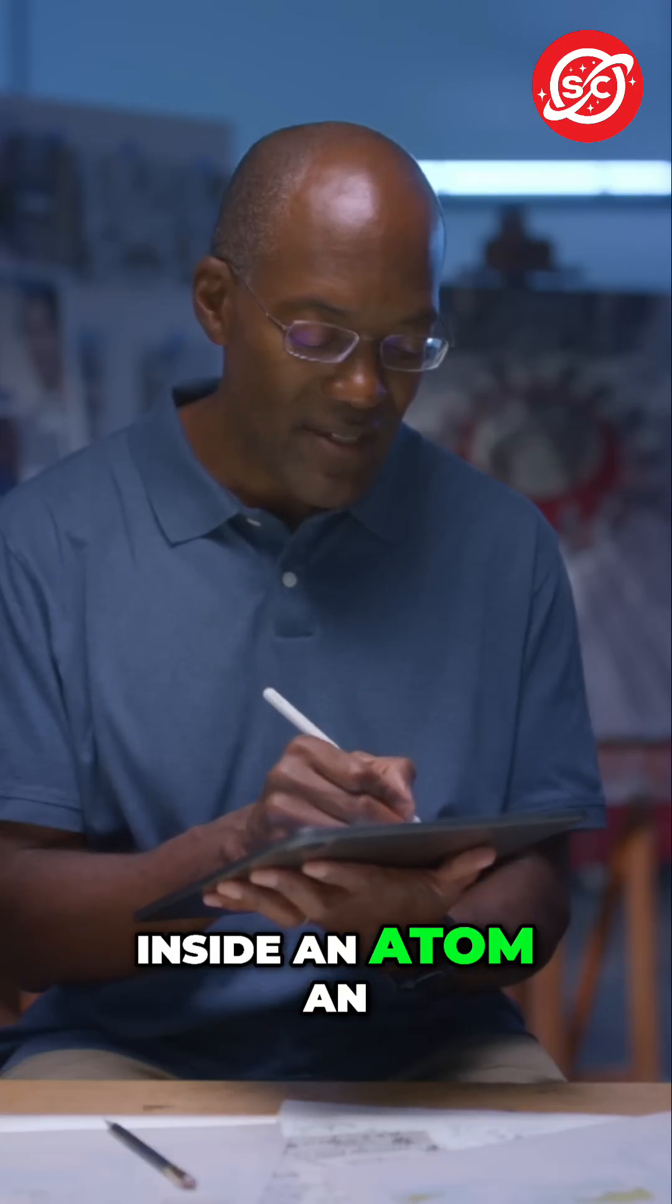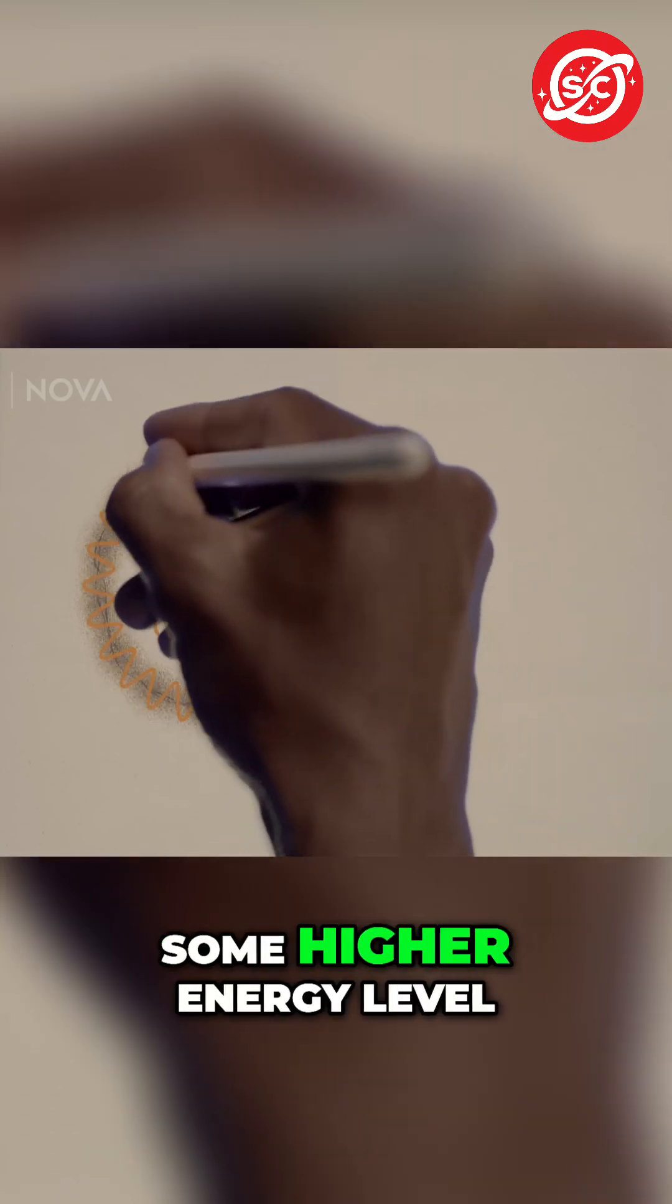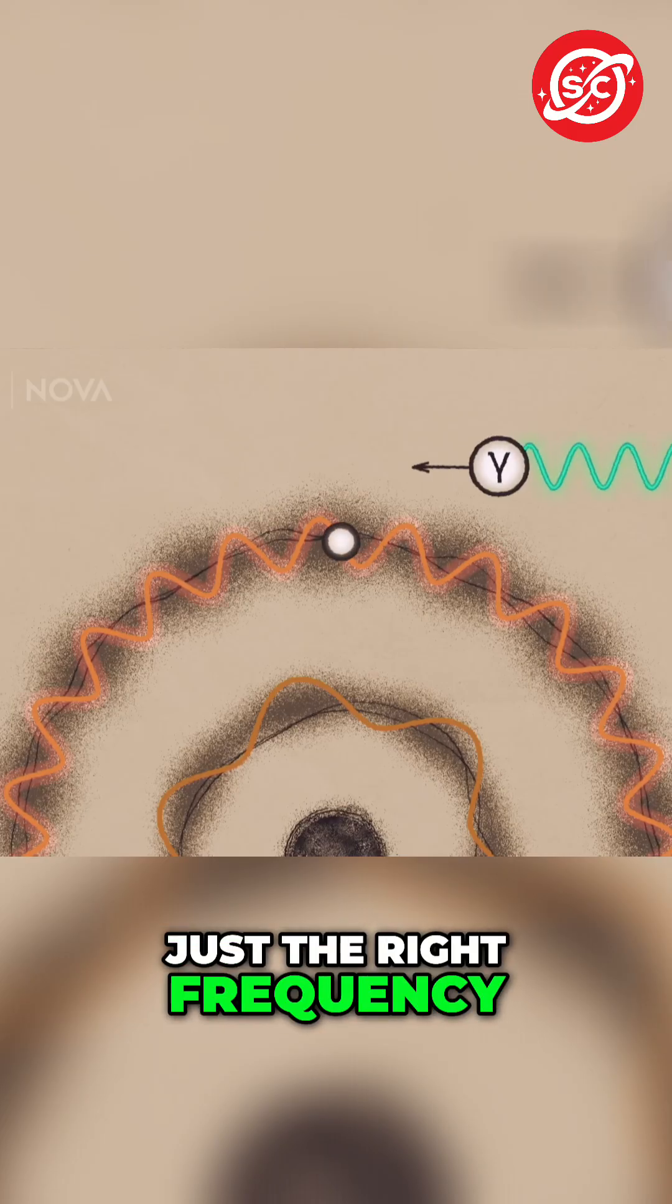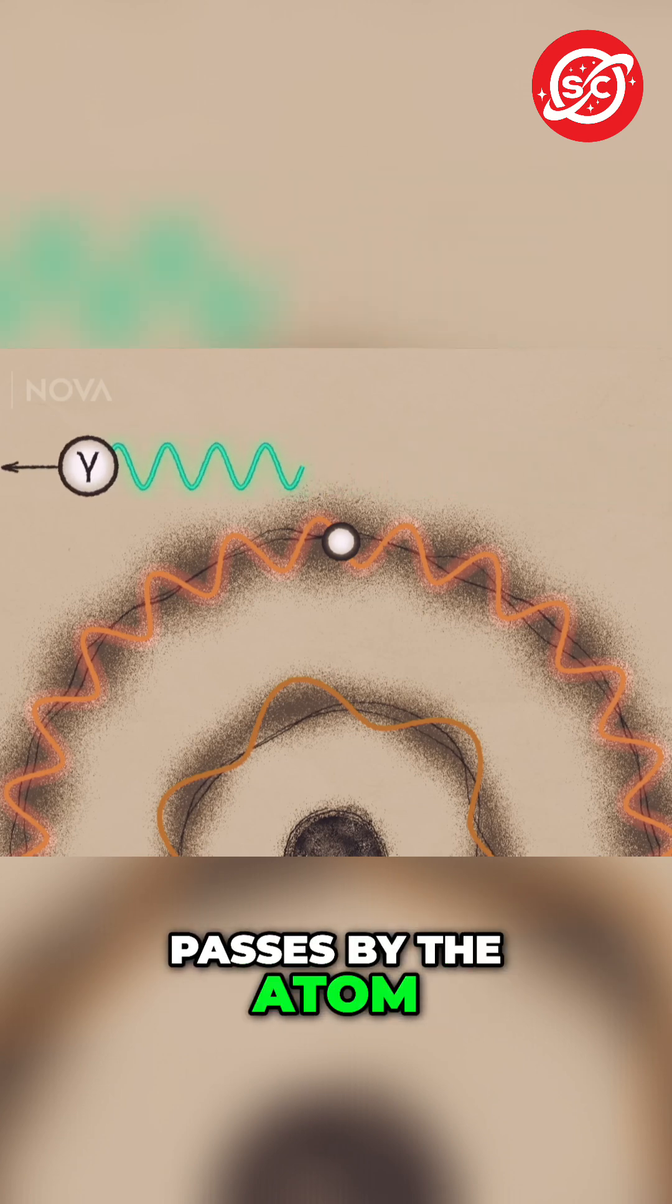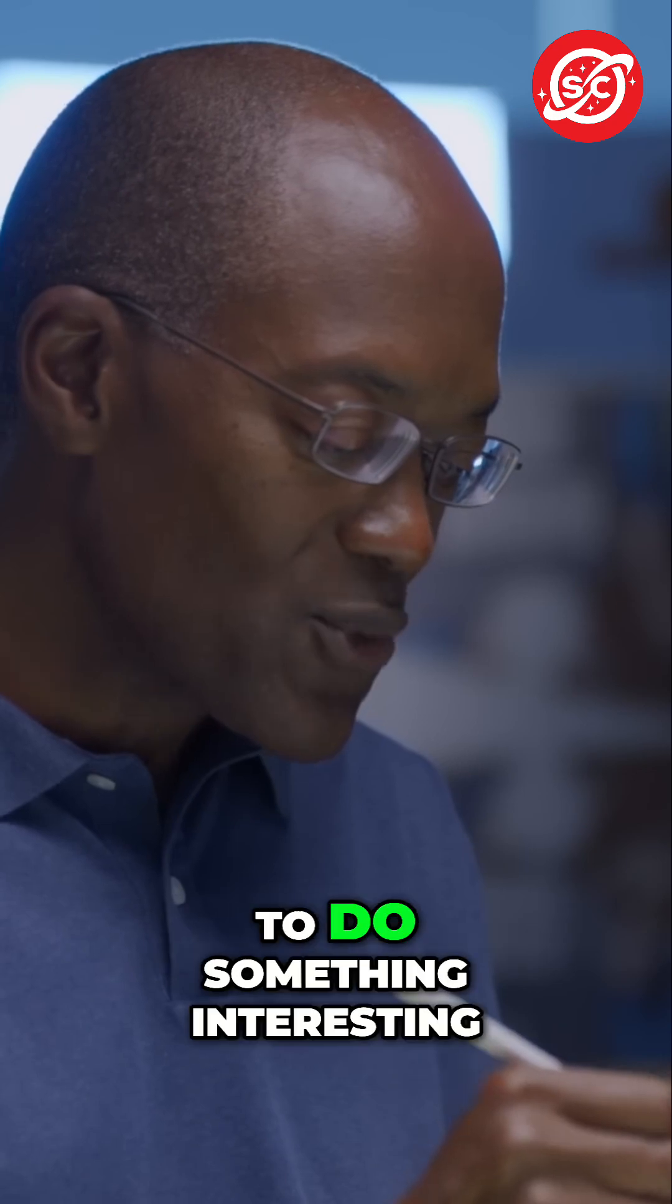Let's say we have inside an atom an electron that's at some excited state, some higher energy level, and now a photon at just the right frequency passes by the atom. It triggers the atom to do something interesting.